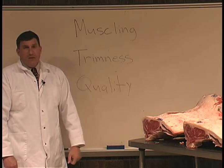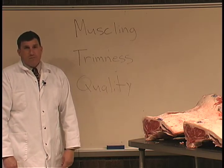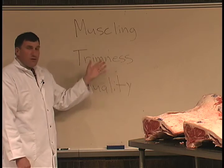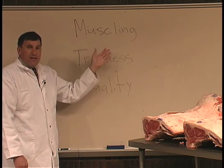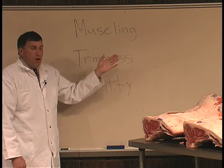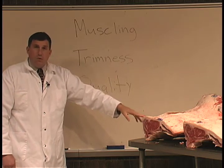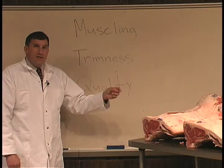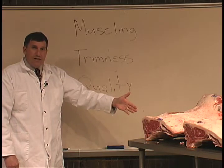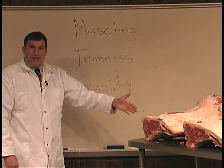Quality is an estimate of eating quality. As we break down these factors, muscling and trimness are an estimate of cut ability — for example, from this loin, what percent of that loin is going to be cut into closely trimmed steaks and roasts, or closely trimmed boneless steaks and roasts? It's an estimate of cut ability: what percentage will be steaks and roasts versus fat and bone.